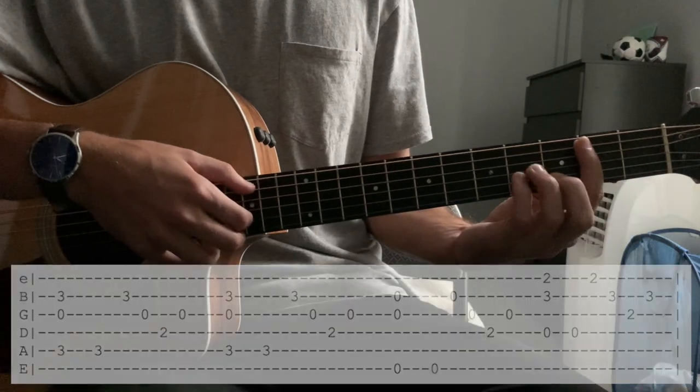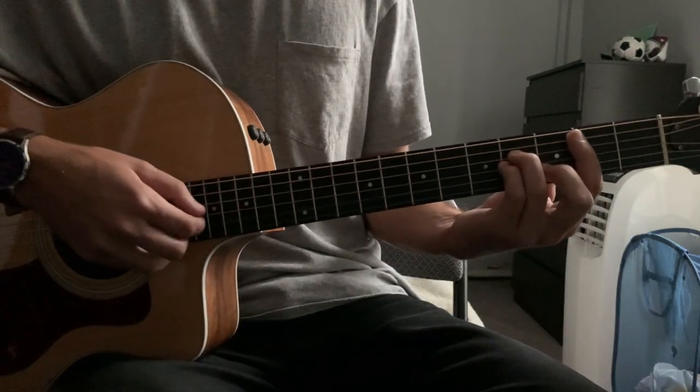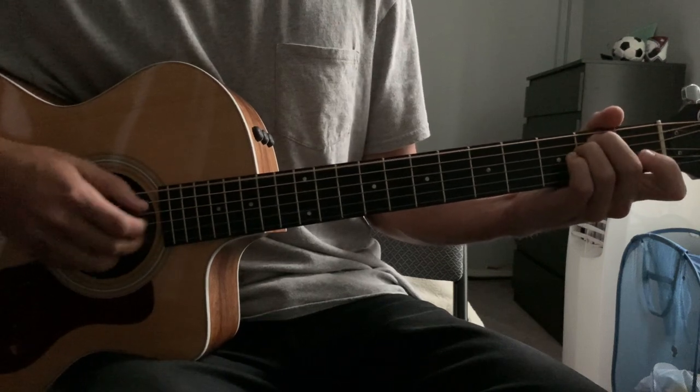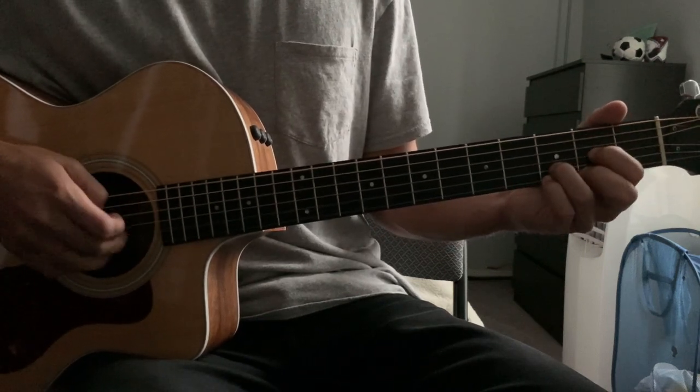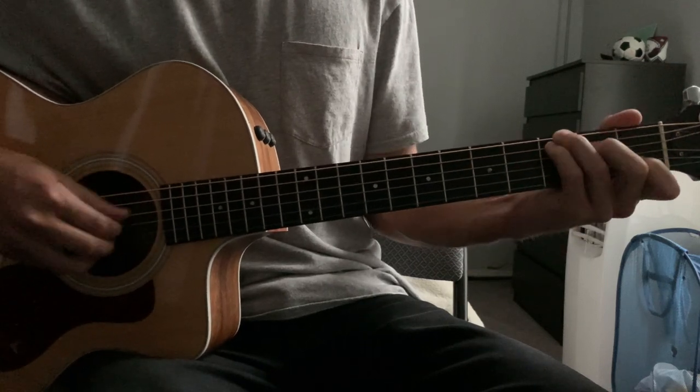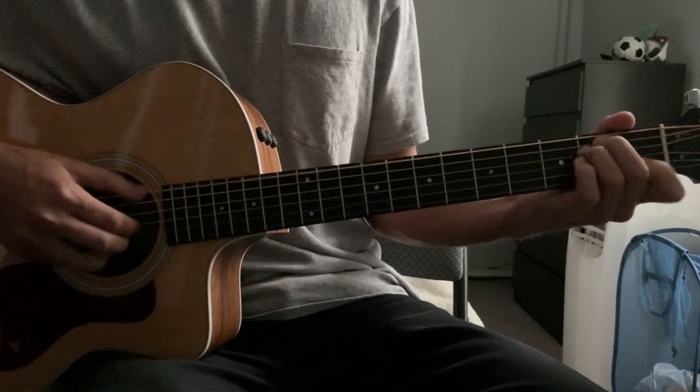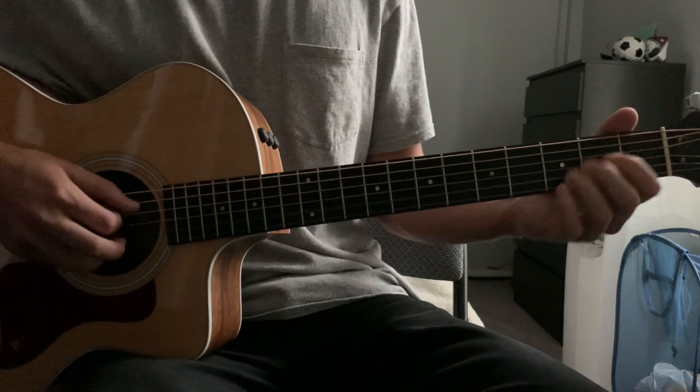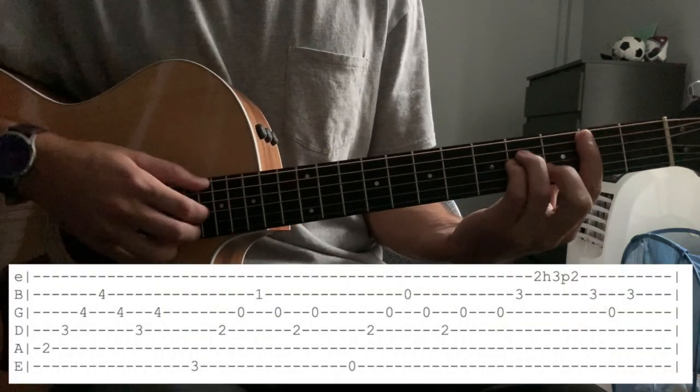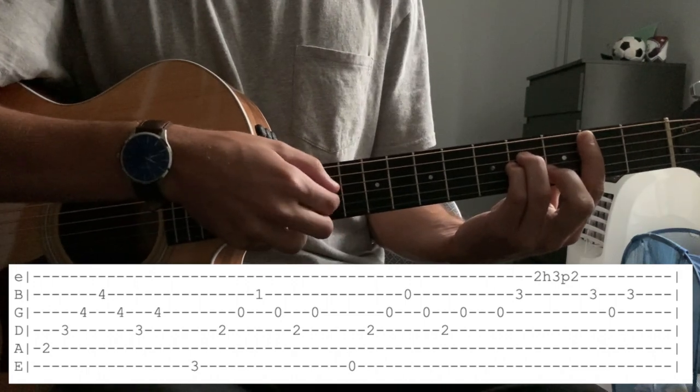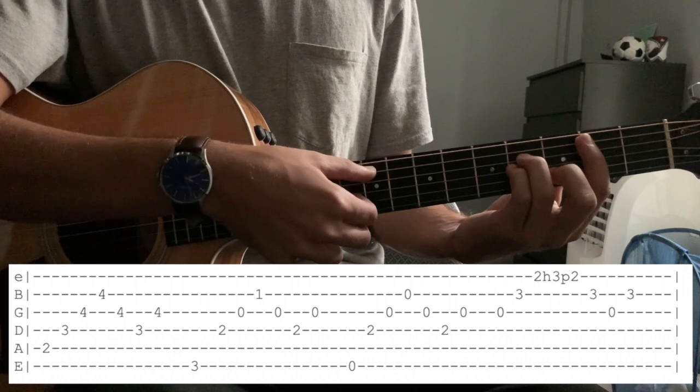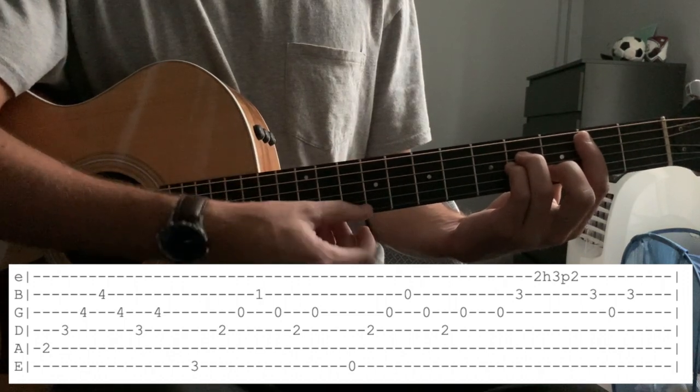In the chorus, you can play this way. So we start out here on this B minor chord. And we pluck through all the strings except for the high E. We don't hit that high E string.